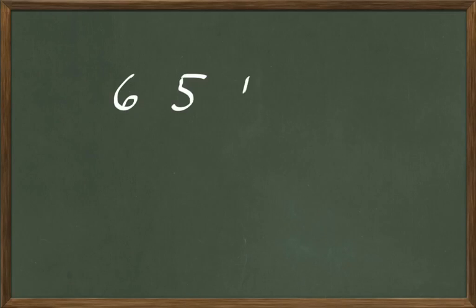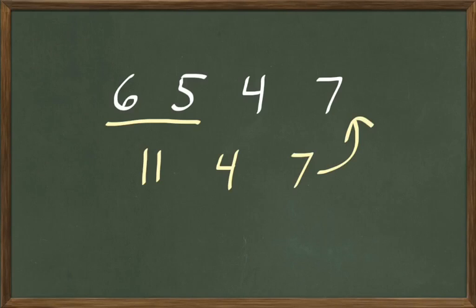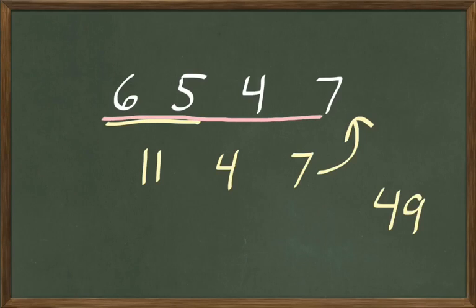Let's do another one: 6 and 5 less 4 multiplied by 7. How many are 6 and 5? 11. If we subtract 4 from 11: 11 less 4 are 7. And then 7 multiplied 7 times? That's 49. So 6 and 5 less 4 multiplied by 7 are 49.